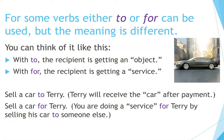For some verbs, either 'to' or 'for' can be used, but the meaning is different. With 'to,' the recipient is getting an object. With 'for,' the recipient is getting a service. For example: 'Sell a car to Terry' — Terry will receive the car after payment. 'Sell a car for Terry' — you are doing a service for Terry by selling his car to someone else.